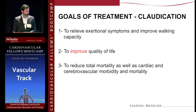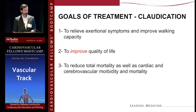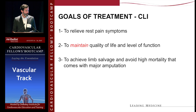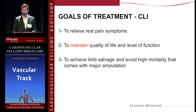The goals of treating claudication are: relieve exertional symptoms, improve walking capacity, and generally improve quality of life. It's less clear whether we can affect cardiovascular events in this group. Whereas the goals of treating CLI patients are: relieve rest pain, maintain their current quality of life, and avoid amputation and the increased mortality that goes with amputations.